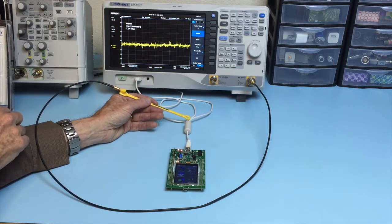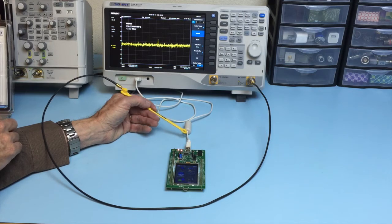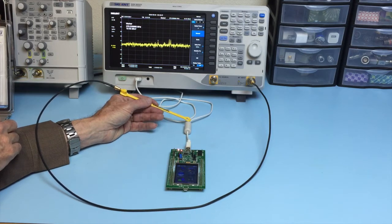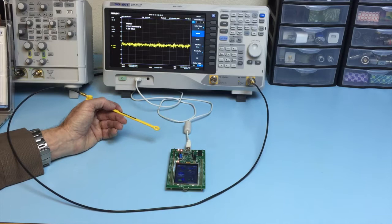There's probably a 10 dB difference between one side of the choke and the other. So we know that that choke is working at 270 MHz.